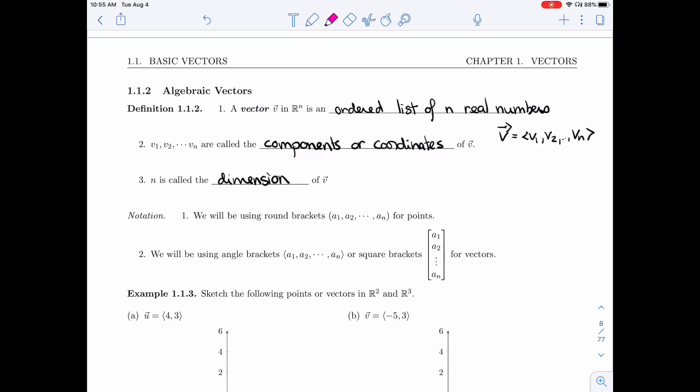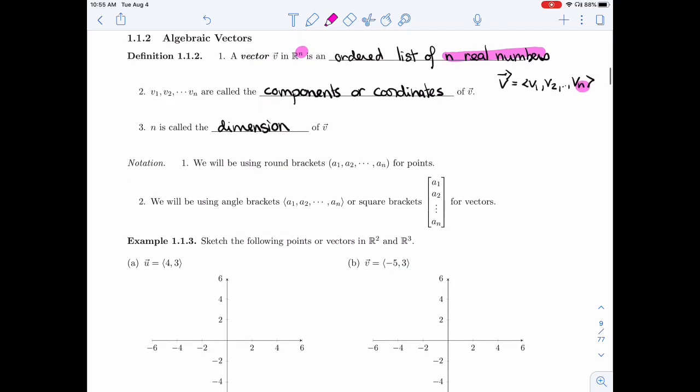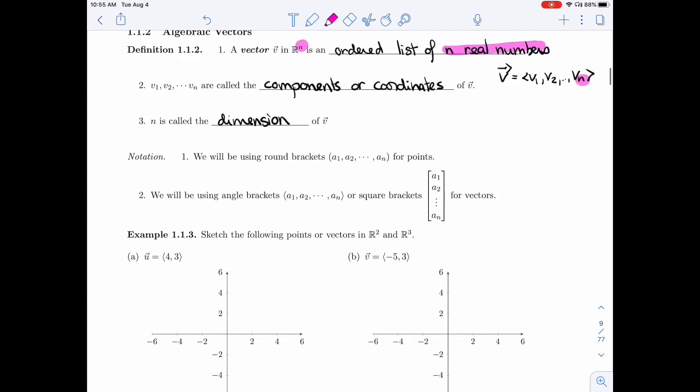Notice that the n in Rn tells you that you should use n real numbers. So the Rn, the n is the dimension. To keep points and vectors separate, because they look a bit the same, we'll be using round brackets for points. And we'll be using angle brackets if we want to write a vector in a horizontal line. We could also write the list vertically and then we'll be using square brackets.